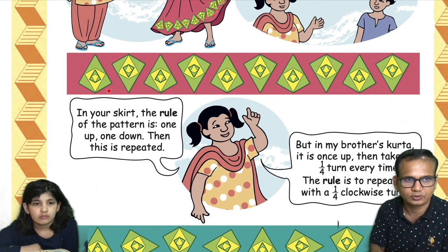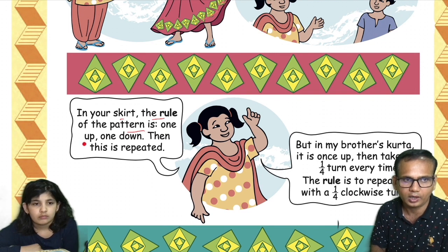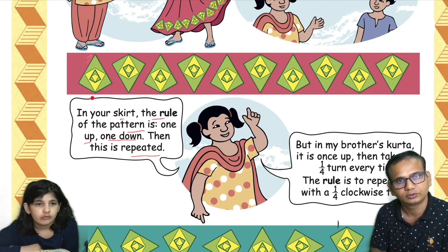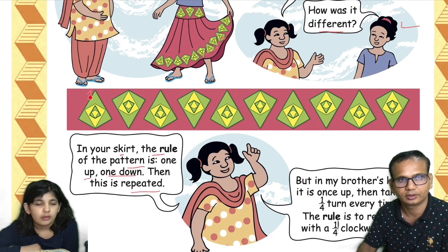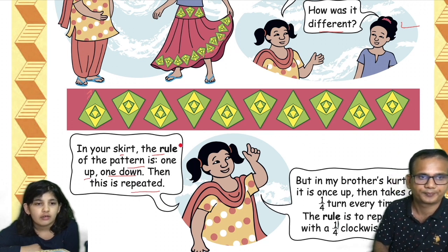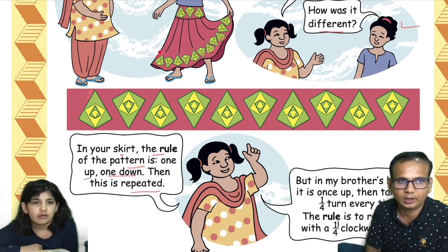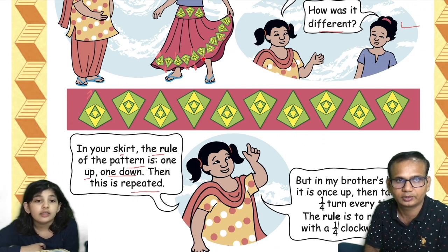On your skirt, the rule of the pattern is one up, one down, then this is repeated — one up, one down. See here, the pink one — one up, then one down, then one up, then one down. Can you see this? One up, then one down.